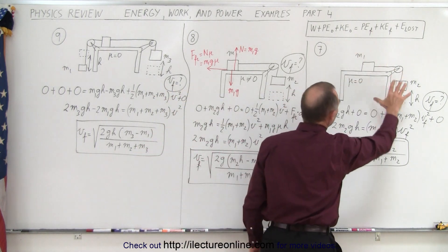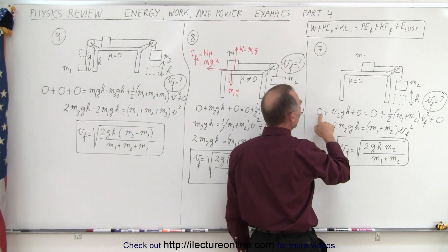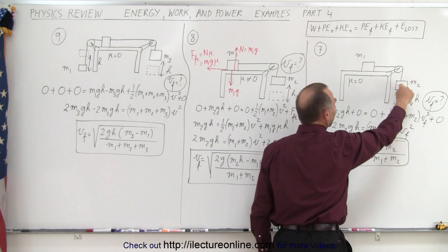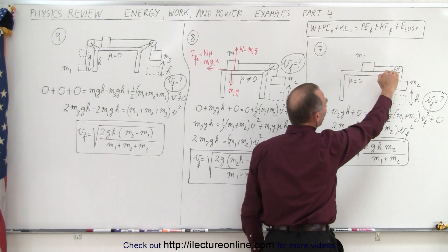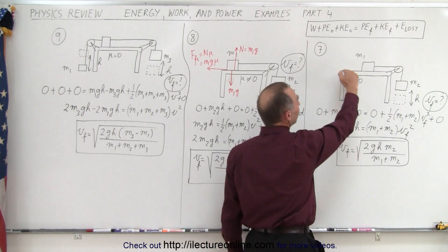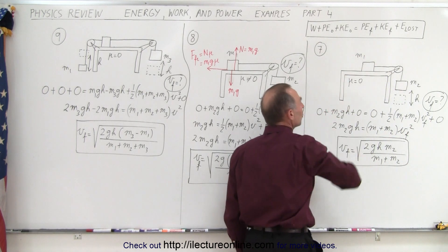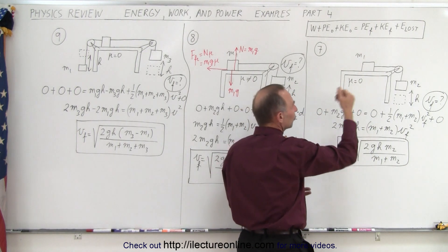So here on the first one notice that we have no work put into the system. We do have potential energy for the second mass because it starts at a height h above the ground and we know it's going to come down. But m1 is going to remain at the same height so we can call that the zero height for m1, so there's no potential energy associated with m1. There's no kinetic energy because the whole system starts at rest.